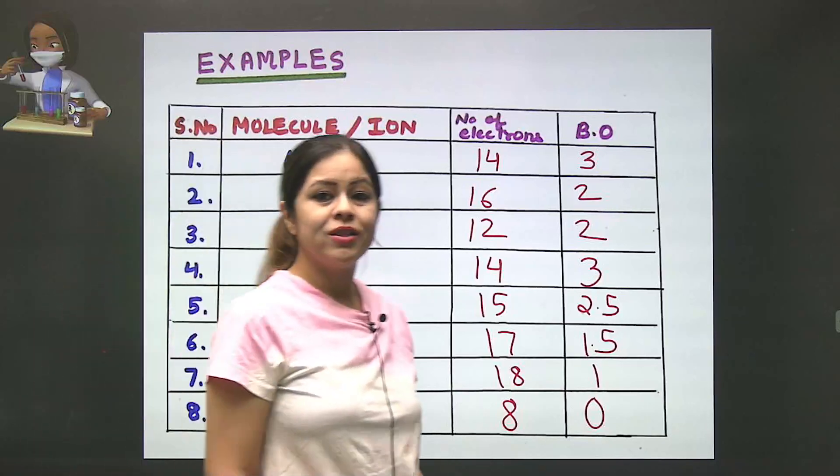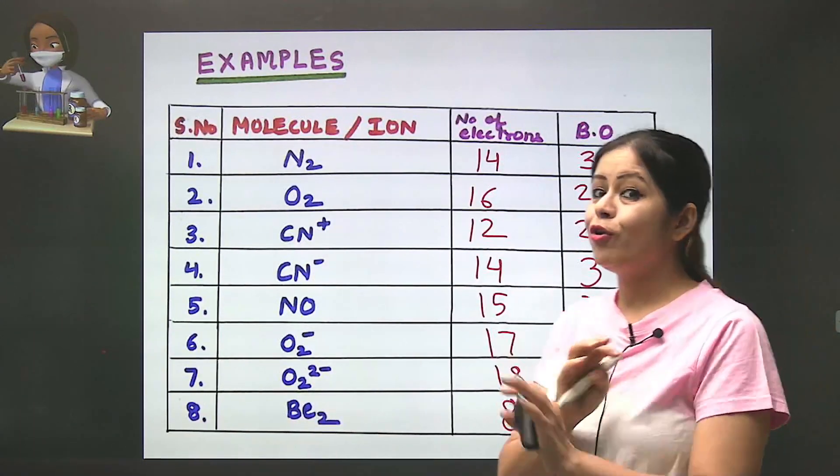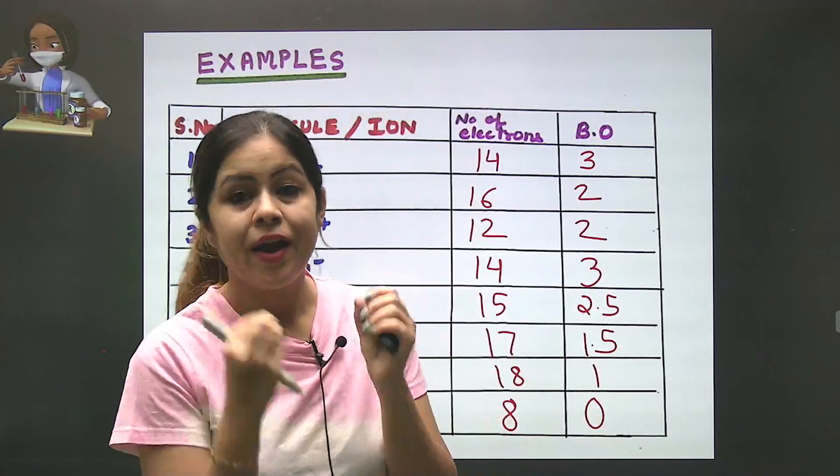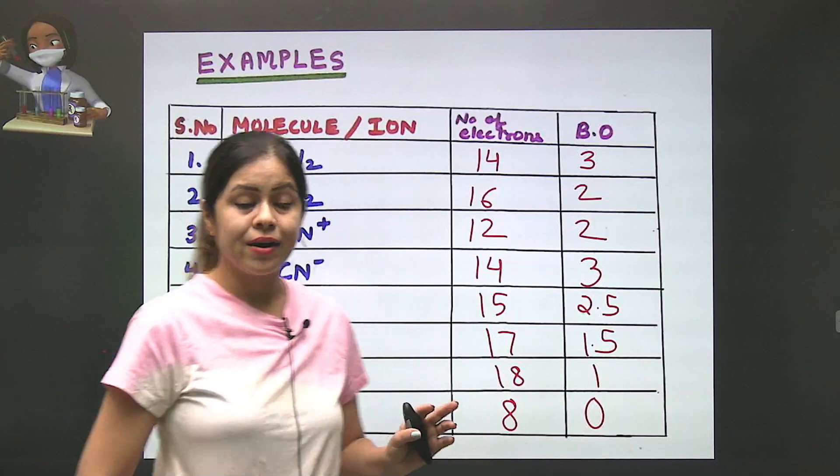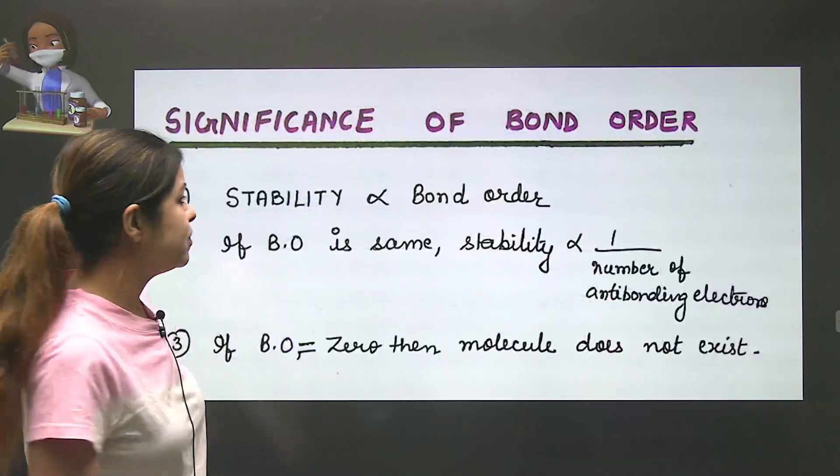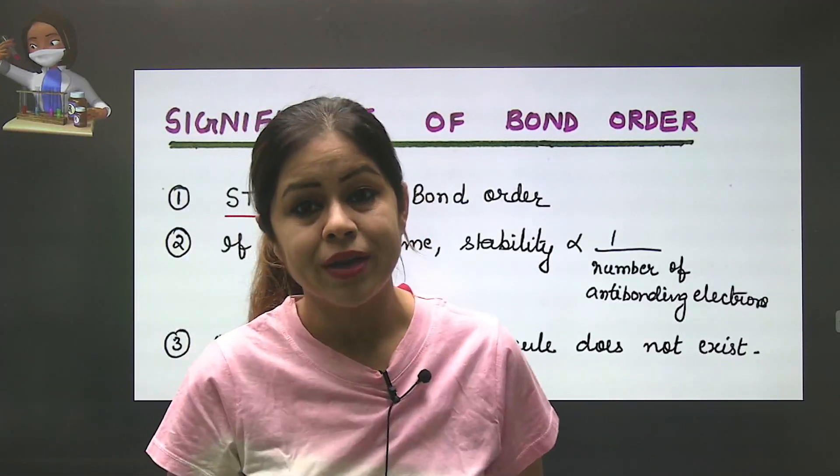It takes only 10 seconds total. So when you get a question about bond order, you don't need to make a molecular orbital diagram, you don't need to count bonding and anti-bonding electrons, you don't need to apply a formula. Simply find the bond order like this. How do questions come? They are stability-based.